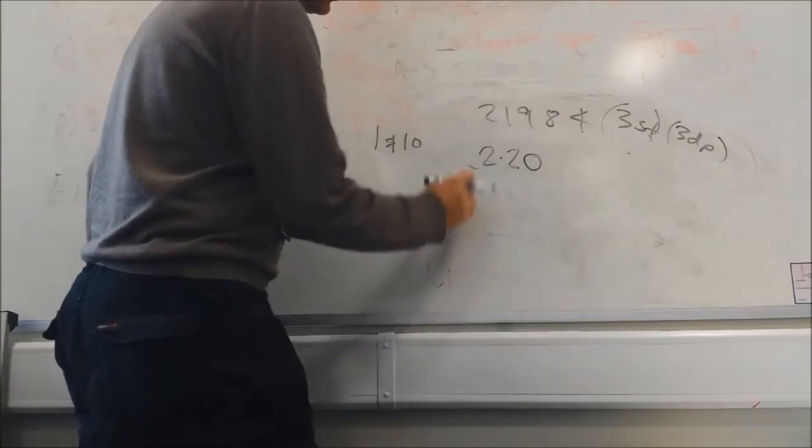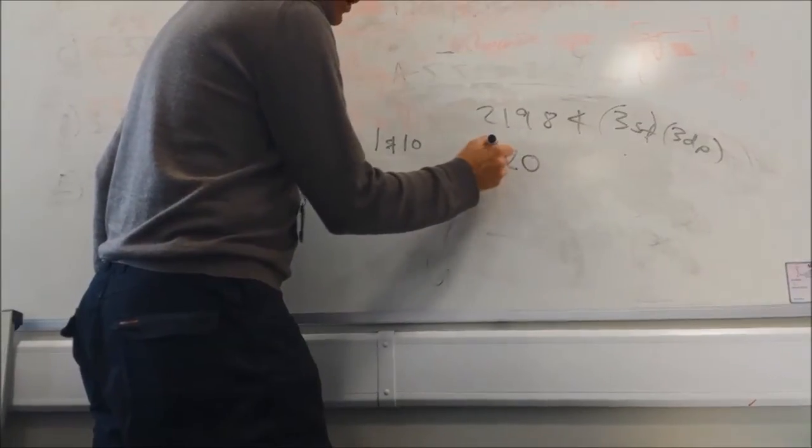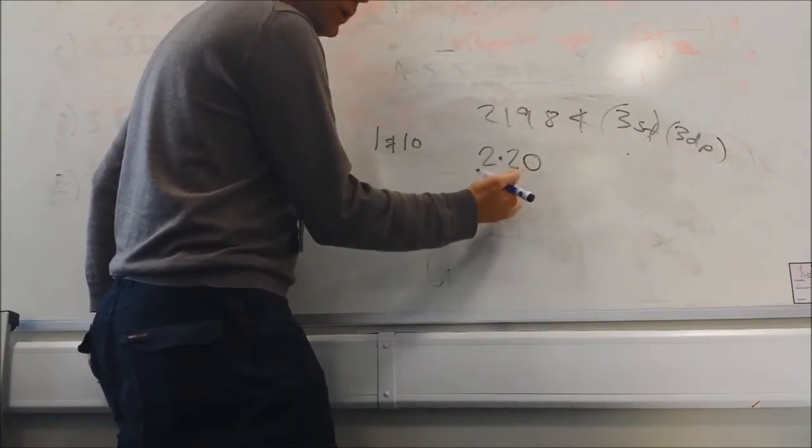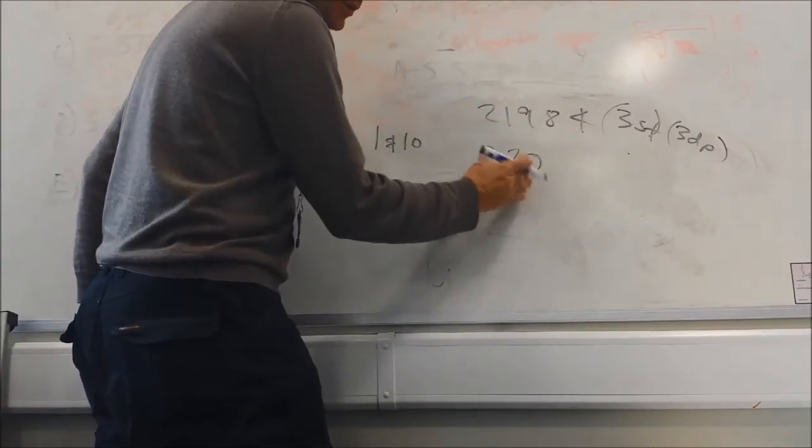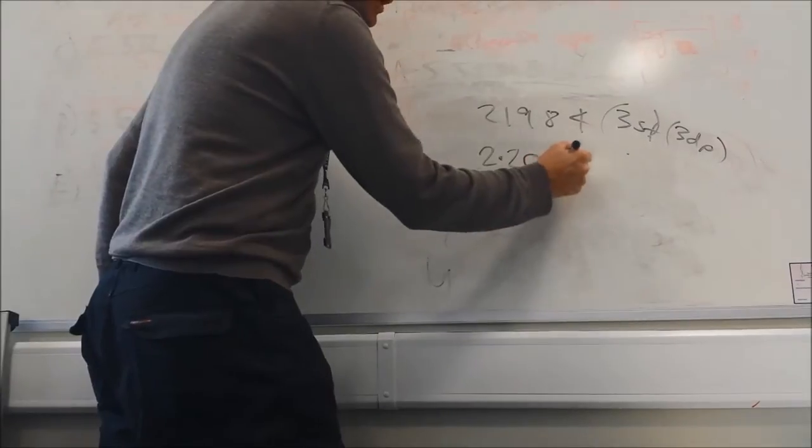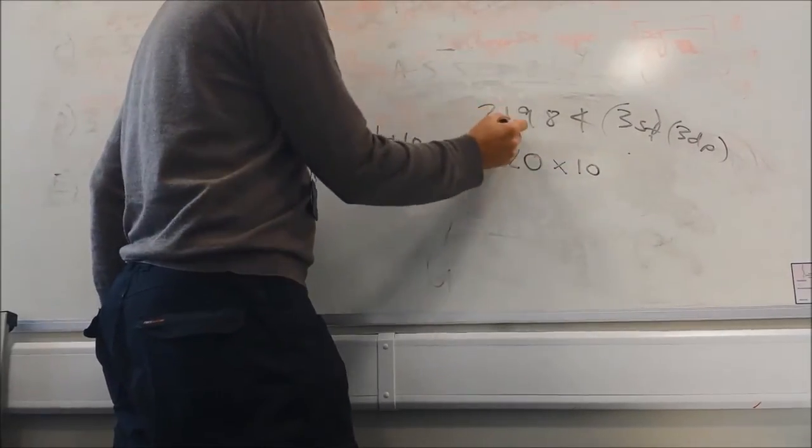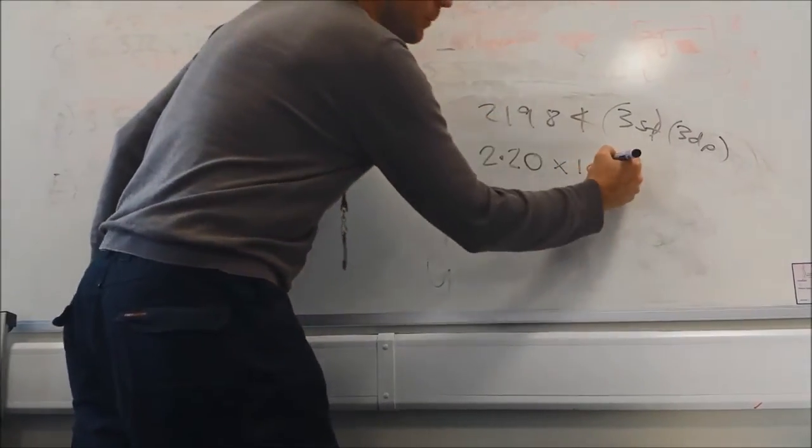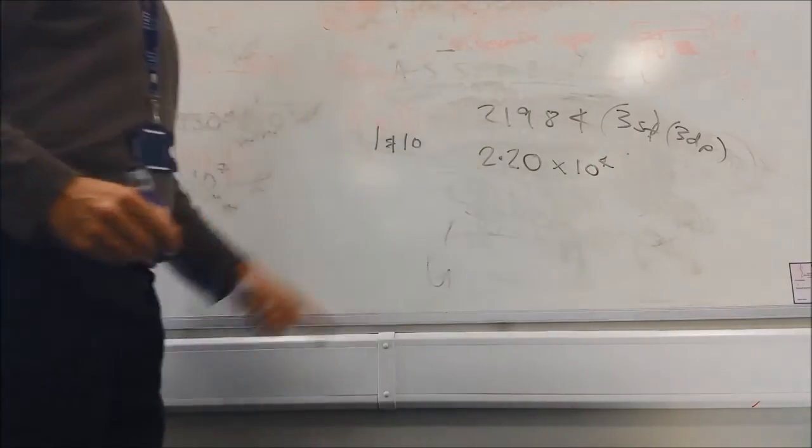So to three significant figures, you'd have to put 2.20. It is significant when you replace a number with a 0. That's a significant digit. So it'll be 2.20 times by 10 to the power, 1, 2, 3, 4 this time. So that's the three significant figures.